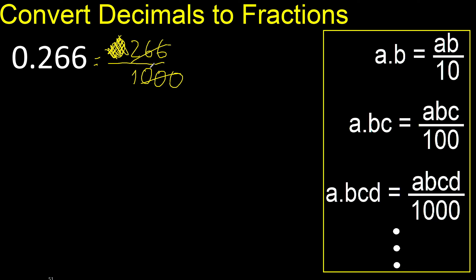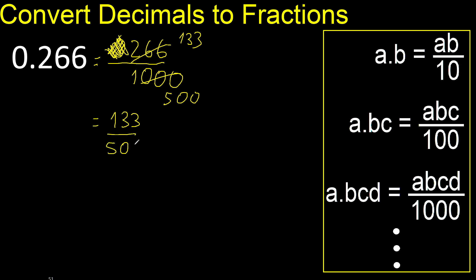Divided by two. Divided by two is here divided by two. Finish because cannot be divided by the same number.